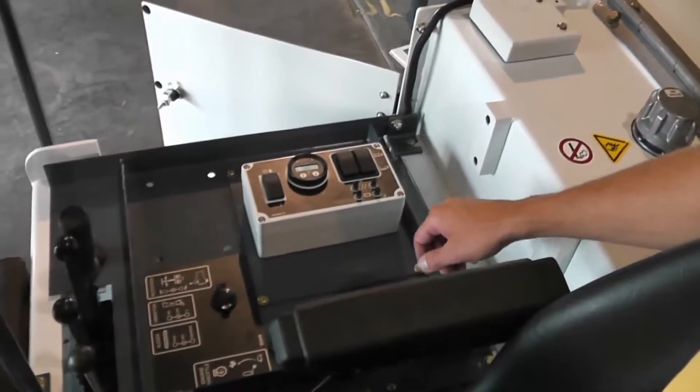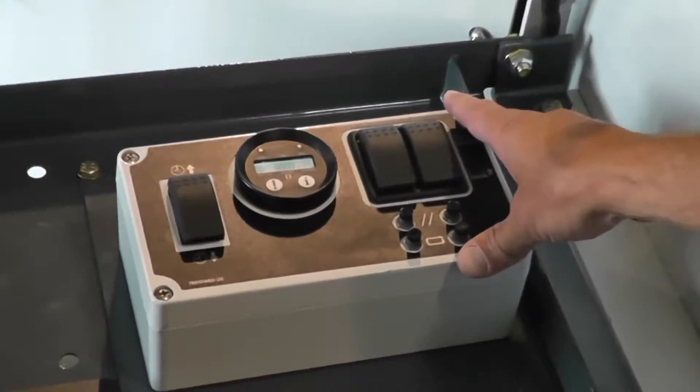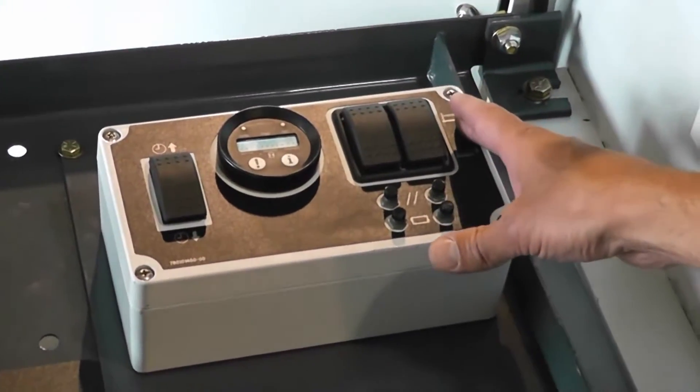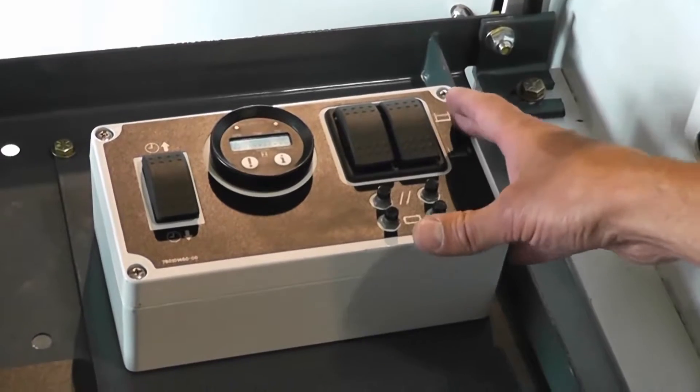The second part of the control system is the operator control interface. This box consists of all the switches necessary to run the control system.